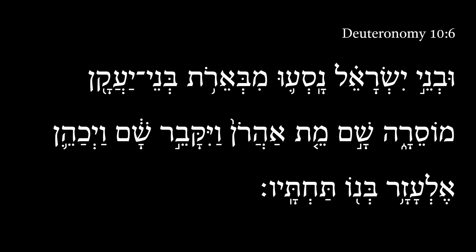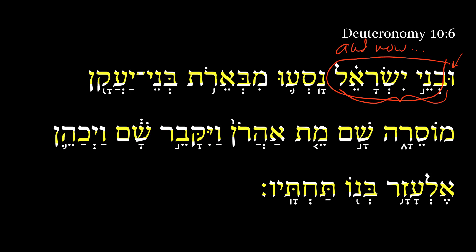Deuteronomy 10:6. Back at the top here, we get the Vav now on the noun, so we get something like 'and now... with some emphasis on the sons of Israel.' The ESV, NASV, and NIV all put the next couple of verses in parentheses, almost like a parenthetical. So we have this idea of: now let me tell you a little something about the sons of Israel, namely...